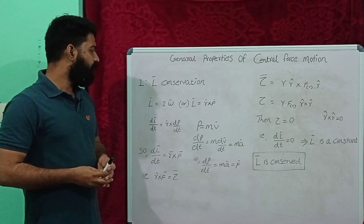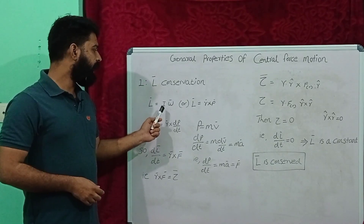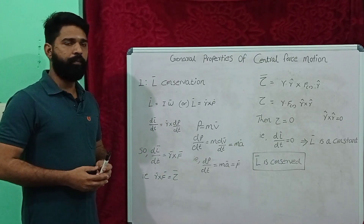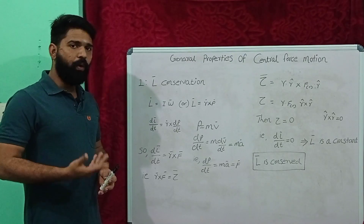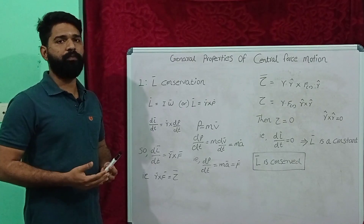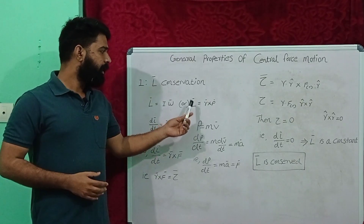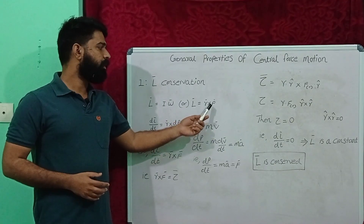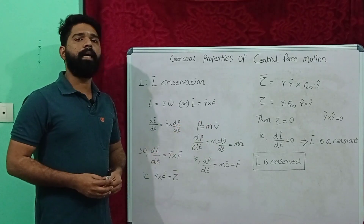We know the angular momentum vector L is equal to I omega, where I means moment of inertia and omega is angular velocity. Or L can be represented in terms of the position vector and the linear momentum: vector L equal to vector R cross vector P, where R is the position vector and P is the linear momentum.